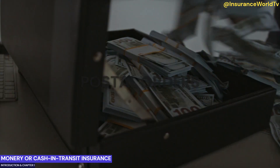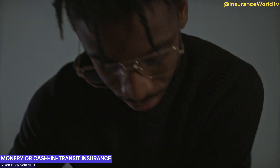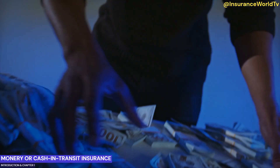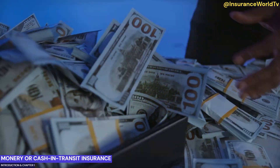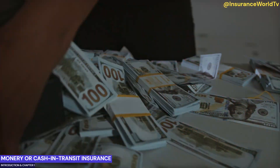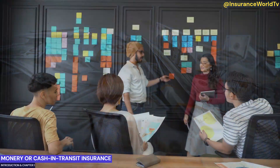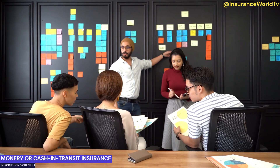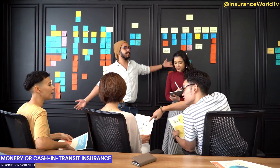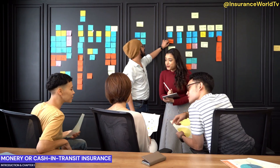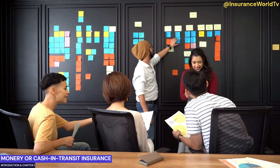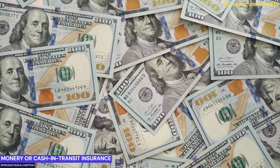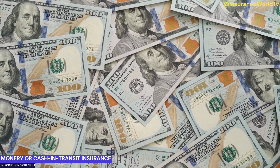It is important to note that while money or cash-in-transit insurance covers physical currency and negotiable instruments, it typically does not include coverage for digital or electronic money, such as funds held in bank accounts, cryptocurrencies, or electronic payment methods like credit cards or digital wallets. These types of financial assets are often covered under different insurance policies, such as cyber insurance or commercial crime insurance.